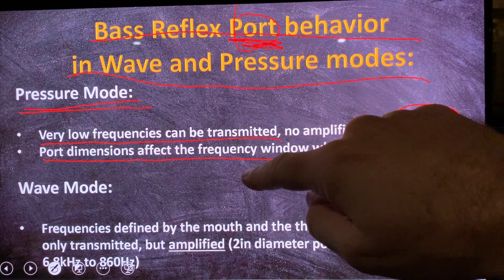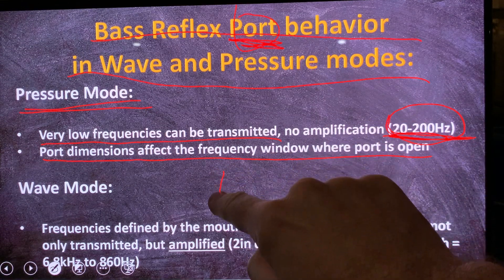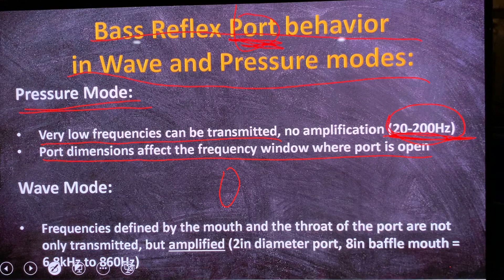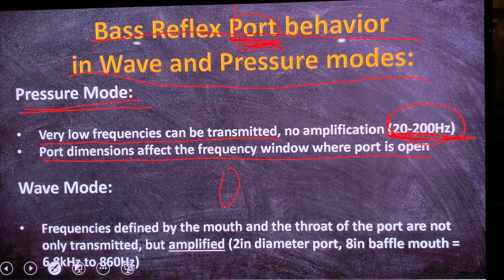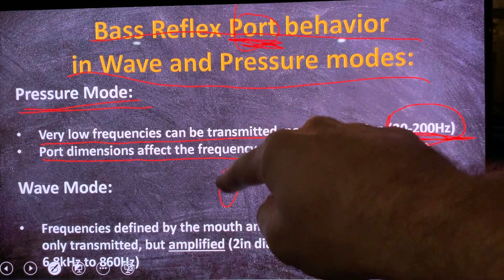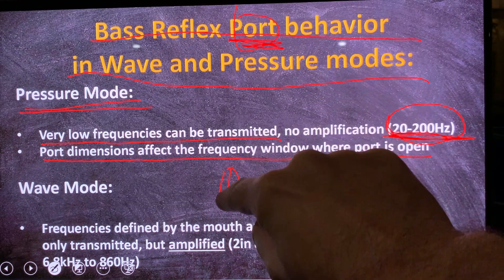A horn is an acoustic coupler that you put in front of a pressure-producing device — be it a loudspeaker driver, a compression chamber of a compression driver, or the inside of a bass reflex cabinet. Where it all starts is called the throat, and the diameter of the throat determines the upper frequency limit.